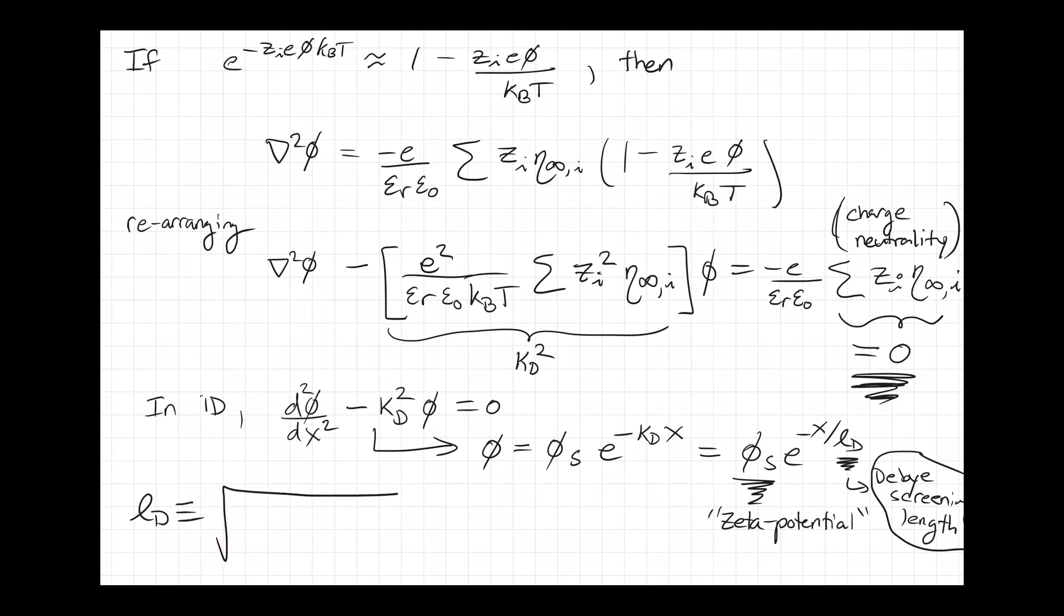So the Debye screening length, if I follow my definition of KD and invert it, involves the square root of the permittivity times kBT divided by a portion that involves basically the summation of the charge squared times the bulk charge number density.